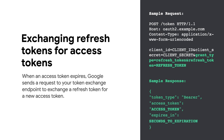When an access token expires, Google sends a request to your token exchange endpoint to exchange a refresh token for a new access token. Similar to the way you handle other requests, do the verifications to ensure the request is valid. If the request is valid, generate a new access token and return it in the body of the HTTPS response. A sample of a token refresh response is shown on the right.